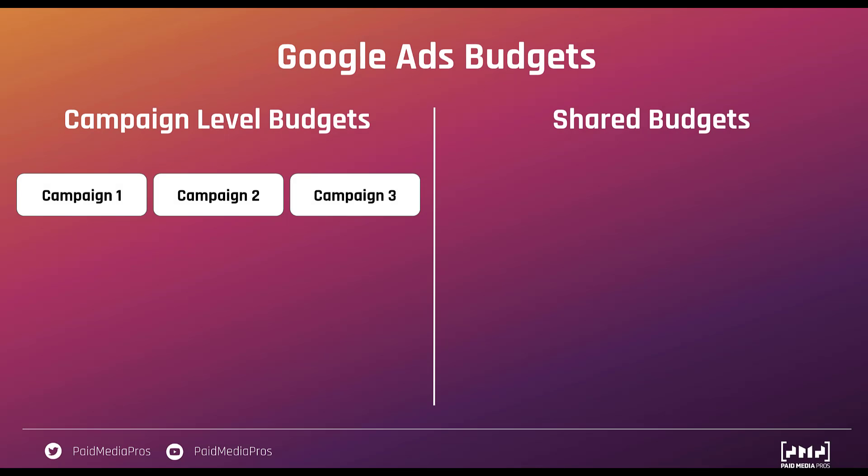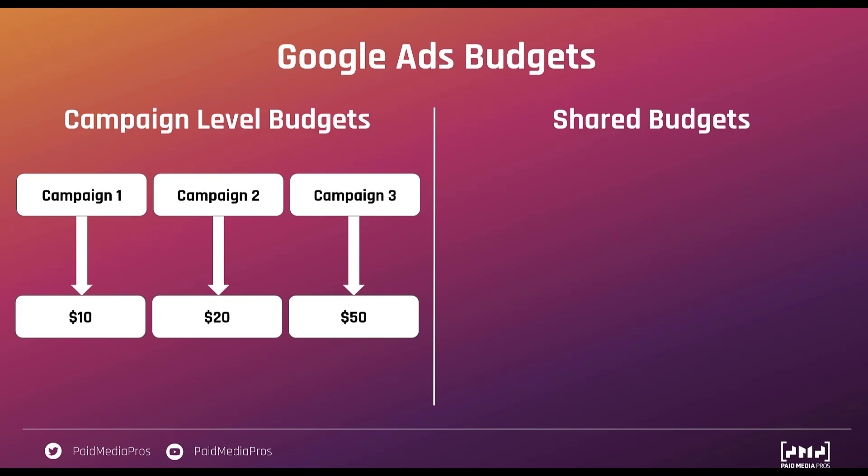I want to start off by giving a visual overview of what shared budgets are, just in case the intro didn't work out for you visual learners. On the left, we've got the regular standard campaign-level budgets. Each of the three campaigns has its own individual budget allotted to that campaign and that campaign only — campaign one is $10, two has $20, three has $50.